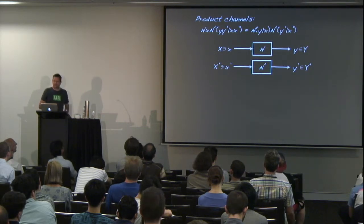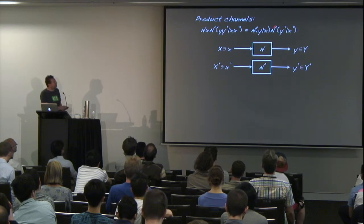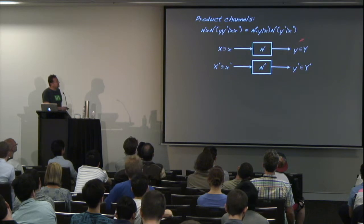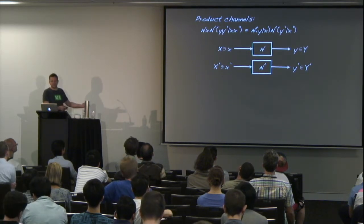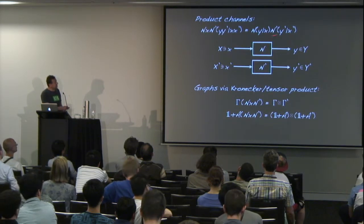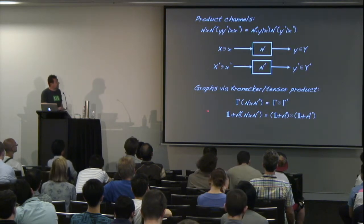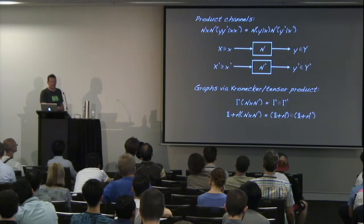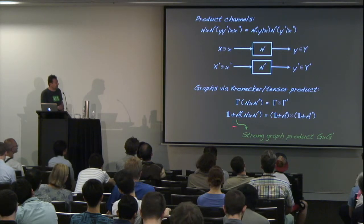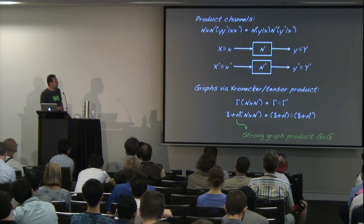We want to use channels multiple times, constructing more complicated channels from simple ones. The fundamental operation is the product of channels. On the level of the adjacency matrix of the transition graph, this is just the tensor product — because a product probability is zero if and only if one factor is zero. The same holds for the confusability graph's adjacency matrix using the extended adjacency matrix, which puts ones on the diagonal to record that each symbol is confusable with itself. The resulting operation on graphs is called the strong graph product.